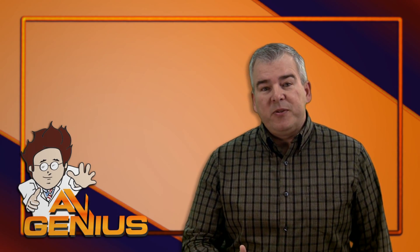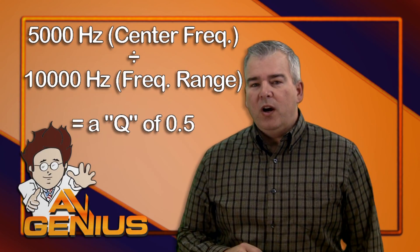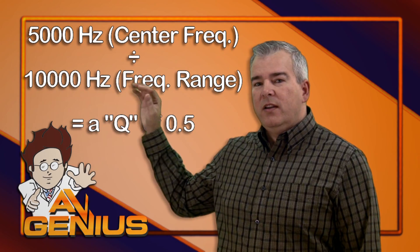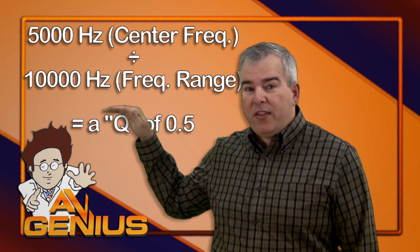If you have a center frequency of 5,000 Hz and the bandwidth was 10,000 Hz, that would be a Q of 0.5, or 5,000 divided by 10,000.